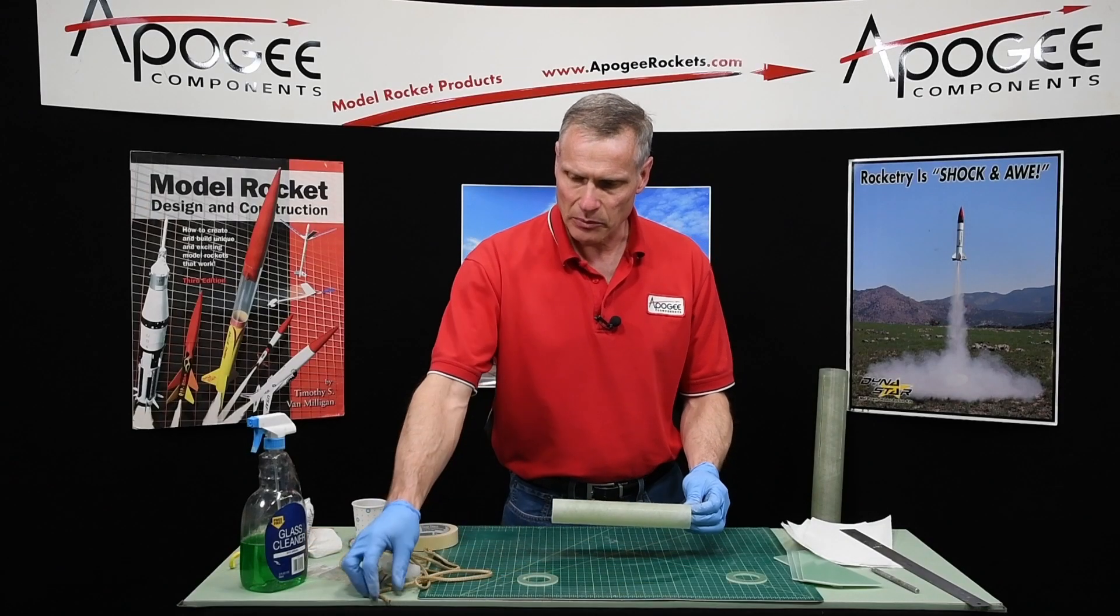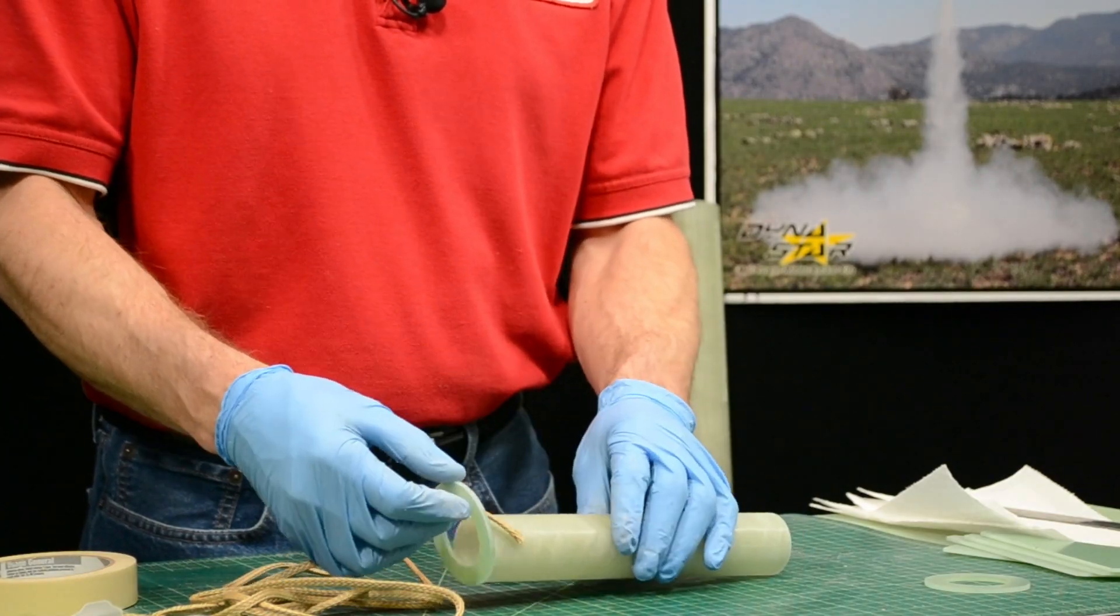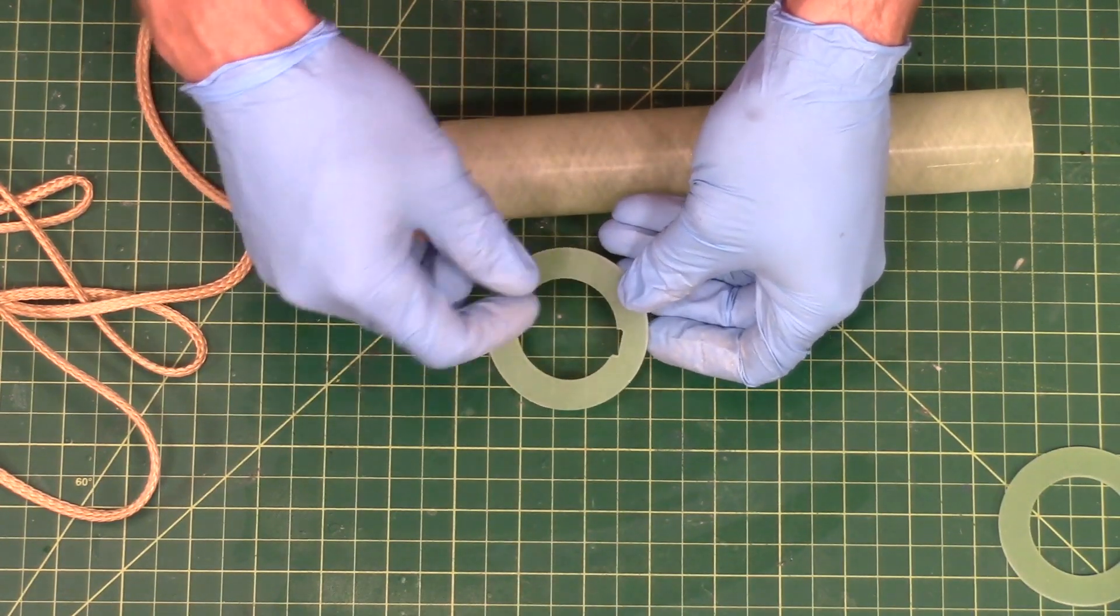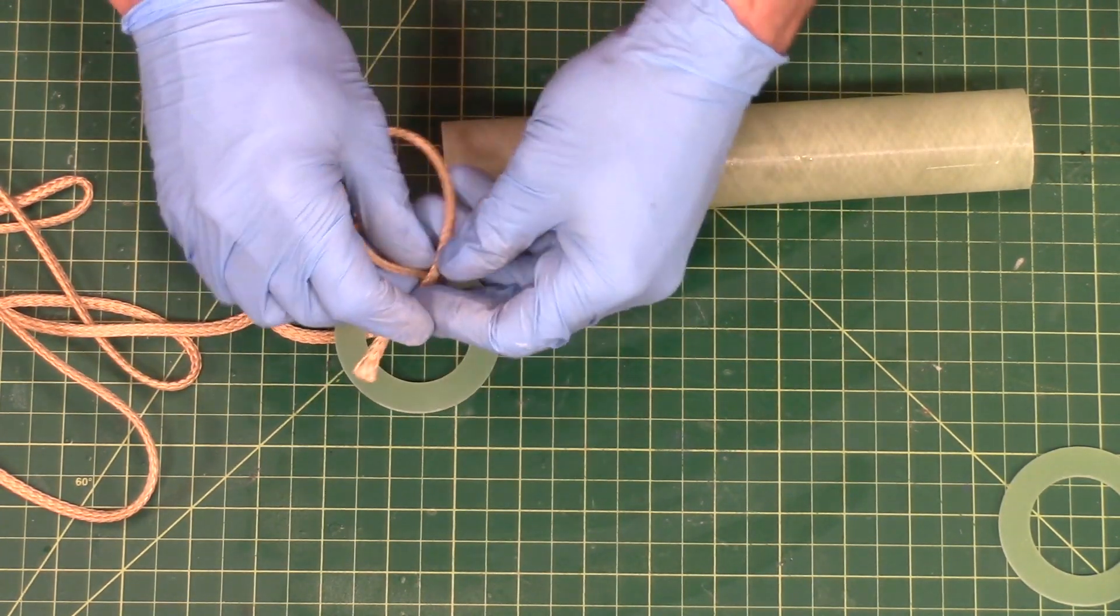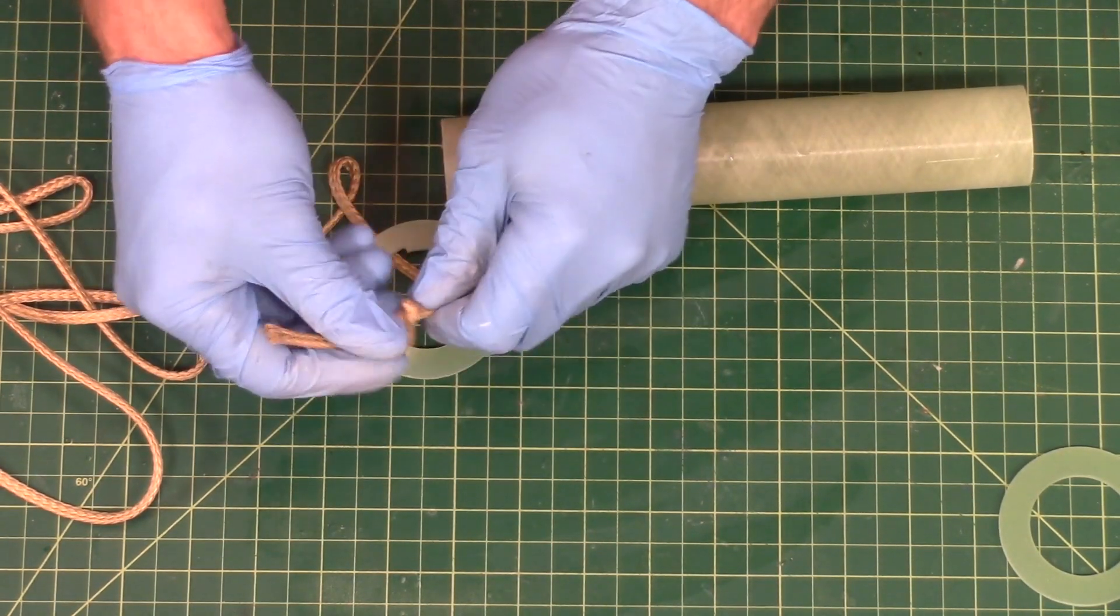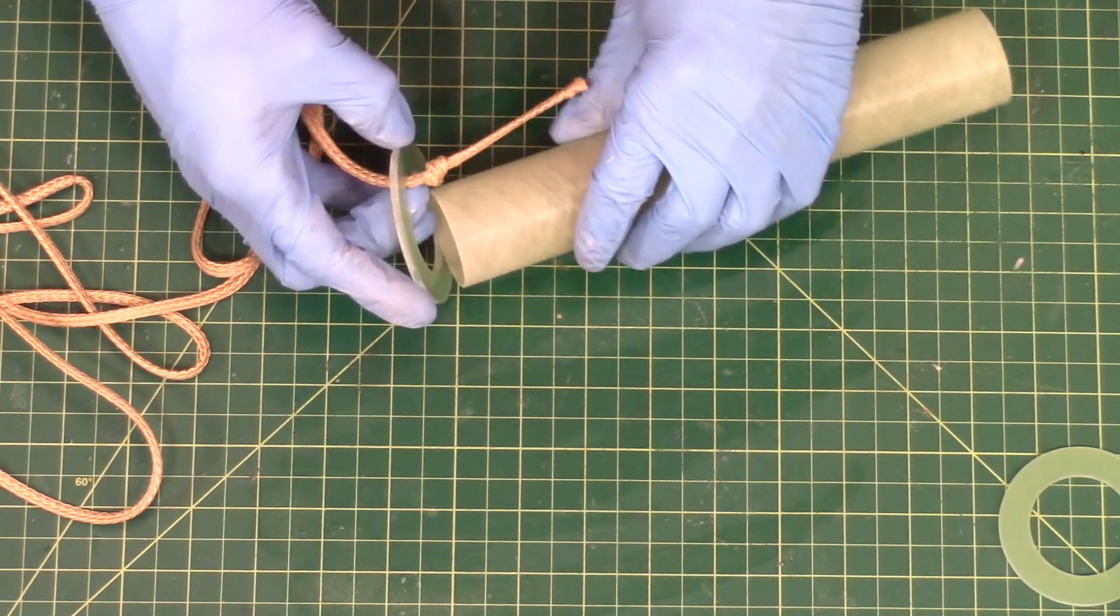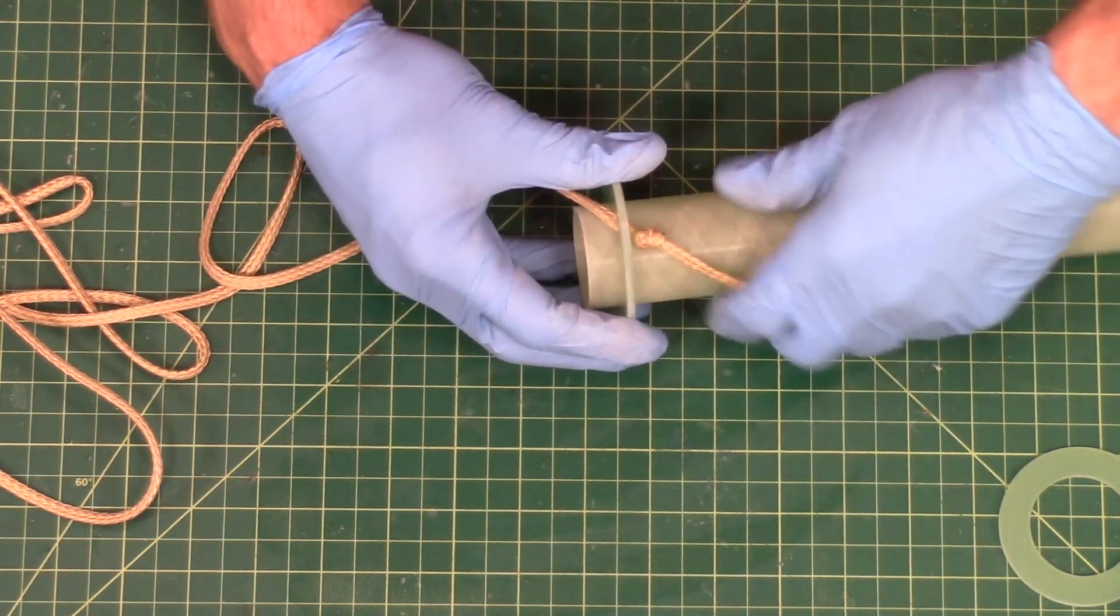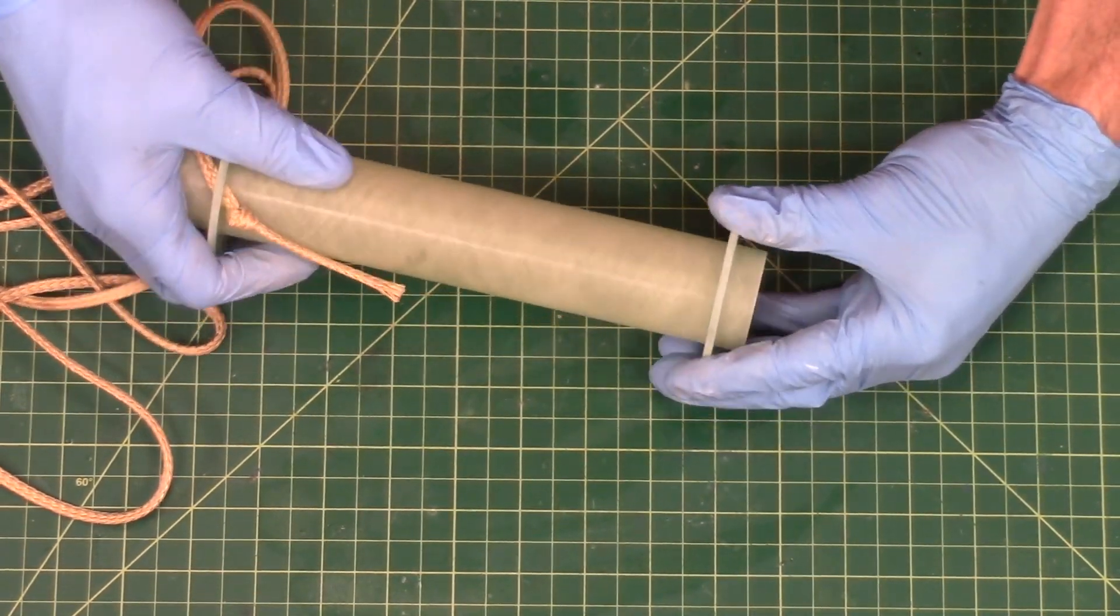Our next step is to take the shock cord and we're going to glue this to the front of this ring, but it has to go through the little notch right there in the ring. The instructions for a Mach 1 also recommend tying a knot in there, and that's to keep it from being pulled back out. So stick it in there like that and then our back ring is going to be glued on right there.